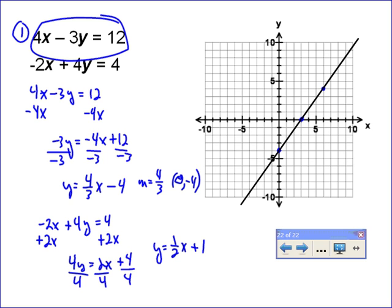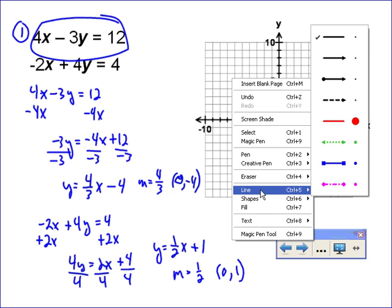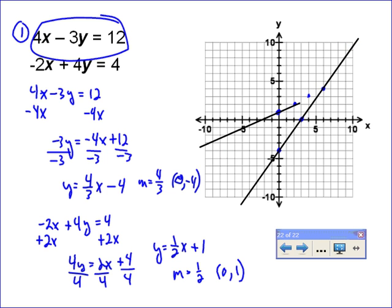So I'm going to have a slope of 1 half and a y-intercept of 0, 1. So I'm going to go up to 0, 1. My slope is 1 half, so it's going to be up 1 to the right 2, and then up 1 to the right 2. And as you can hopefully see, it's pretty apparent what your answer is going to be.